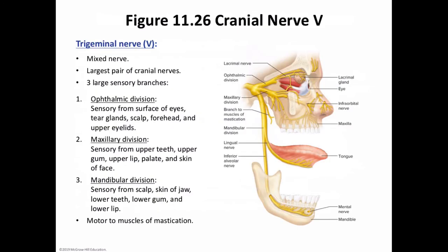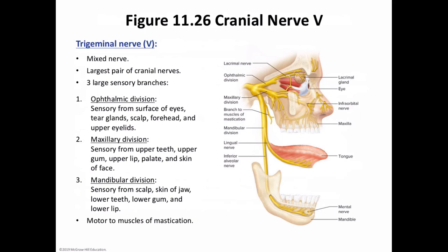Cranial nerve number five is the trigeminal nerve — the largest pair. They arise from the pons and are mixed nerves with more extensive sensory portions. Each sensory component includes three large branches: the ophthalmic, maxillary, and mandibular divisions — please see figure 11.26. The ophthalmic and maxillary divisions are sensory, and the mandibular division is both sensory and motor, controlling the muscles used for mastication.